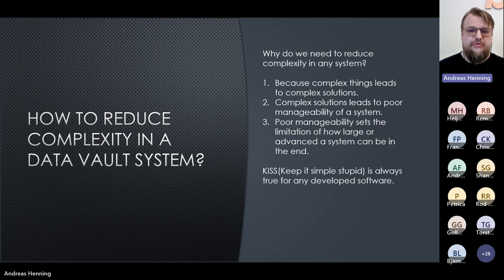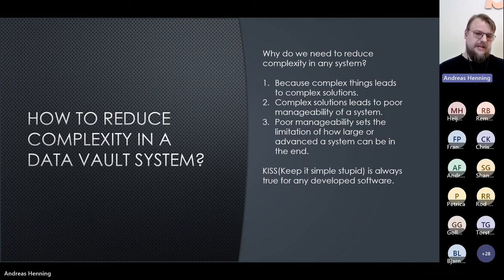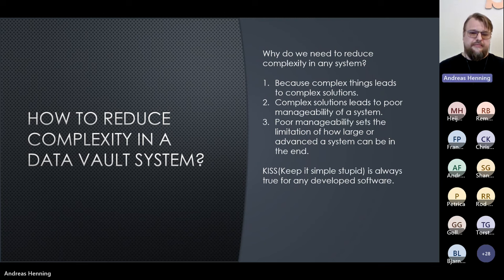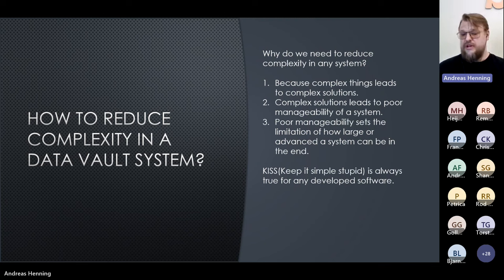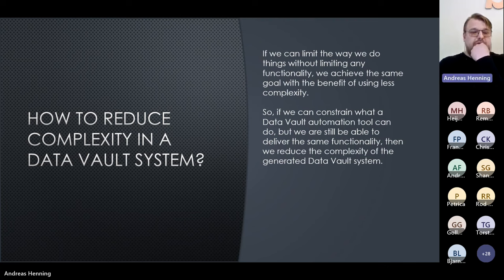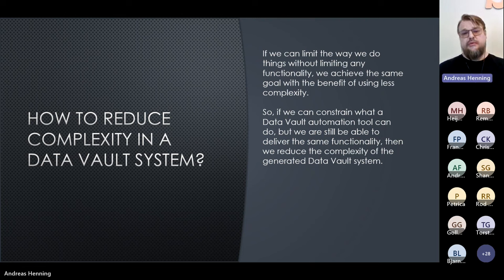This presentation is about reducing complexity. Why do we really need to reduce system complexity? We need to reduce it because complex things lead to complex solutions, and complex solutions lead to poor manageability of a system. Poor manageability sets the limitation on how large or advanced a system can actually be. Over the years I've learned a lot about delivering code, but the one thing that made the most impact is: if you can simplify something, make it easier to understand, easier to extend, and easier to communicate. The principle of keep it simple and stupid is always true in branding and in software development, including automating data access.